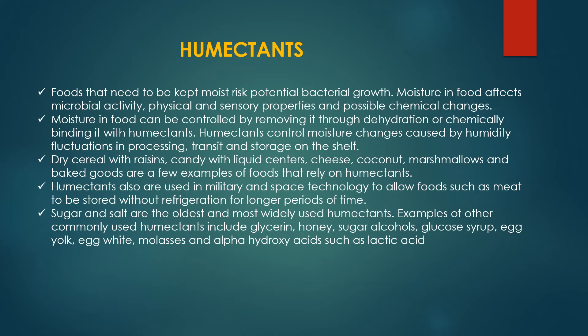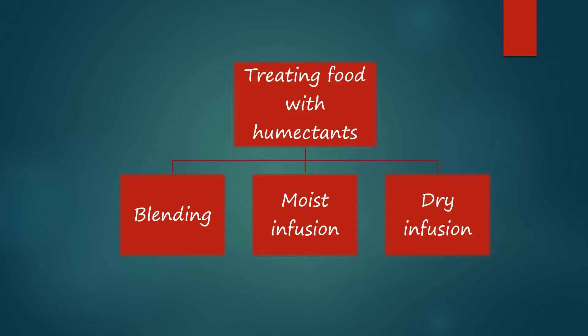Other examples of humectants are glycerin, honey, sugar alcohols, glucose syrup, egg yolk, molasses, and alpha hydroxy acids such as lactic acid. The methods used for treating food with humectants are: blending, moist infusion, and dry infusion.